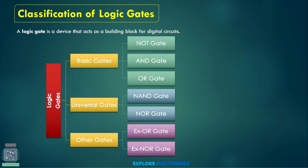Let us understand the classification of these logic gates. Logic gates can be classified as basic gates, universal gates, and other gates. The basic gates are the NOT gate, AND gate, and OR gate. The NAND gate and NOR gate are universal gates. The XOR gate and XNOR gate are the other gates.